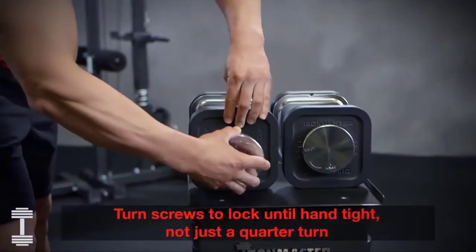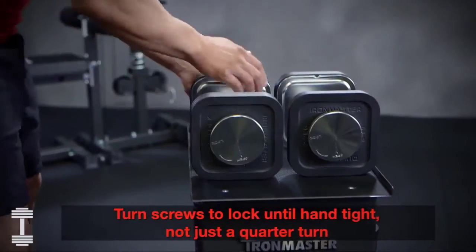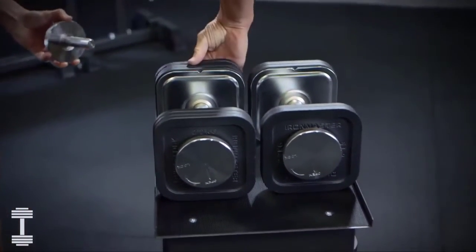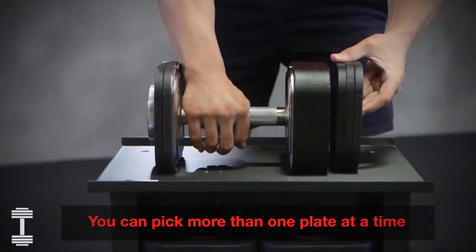The best way to change weights is to use one hand to unlock and remove a locking screw while using the other hand to move plates on or off. Repeat this process on all four ends.